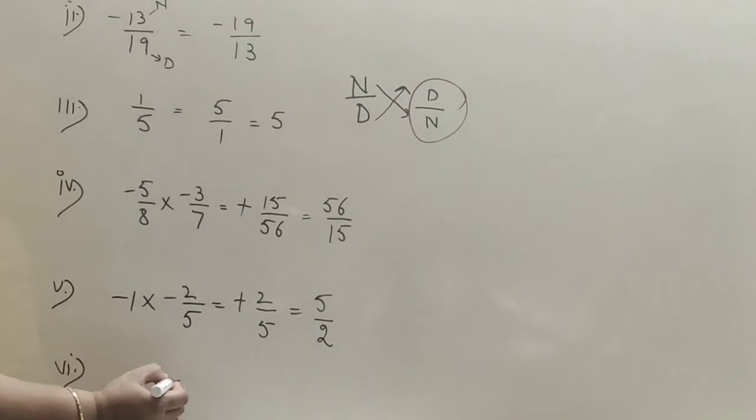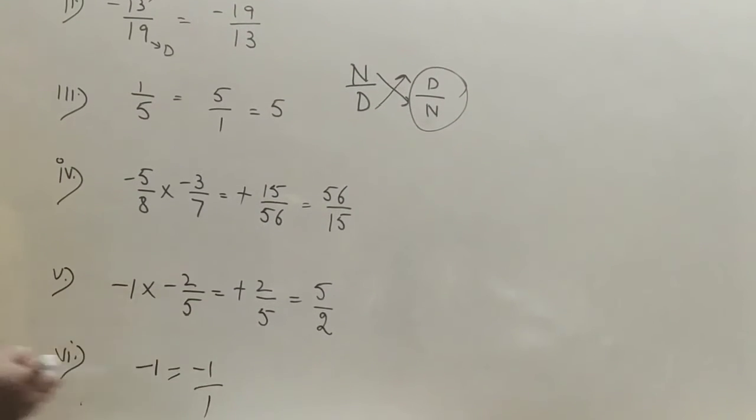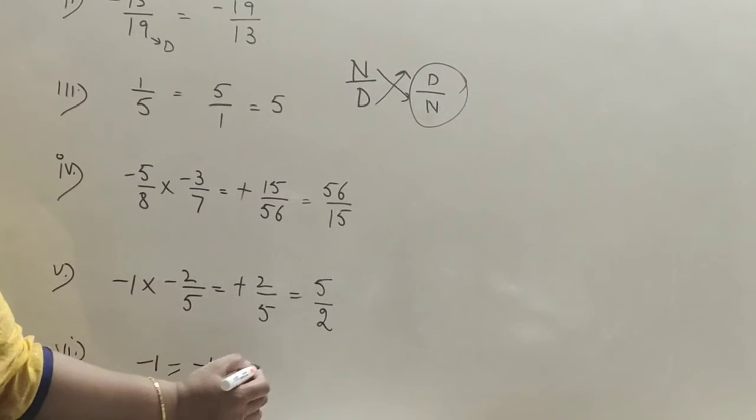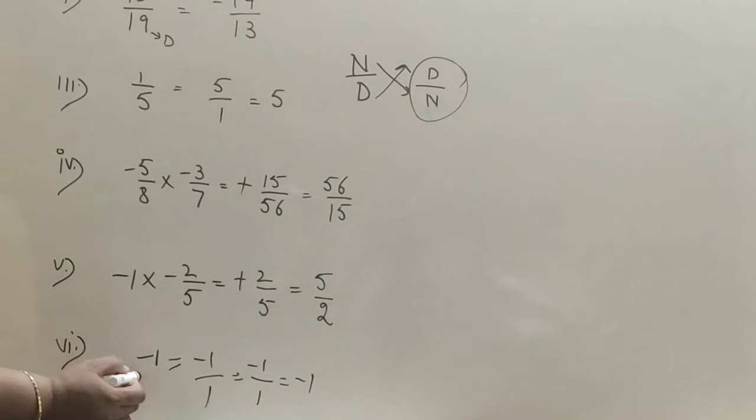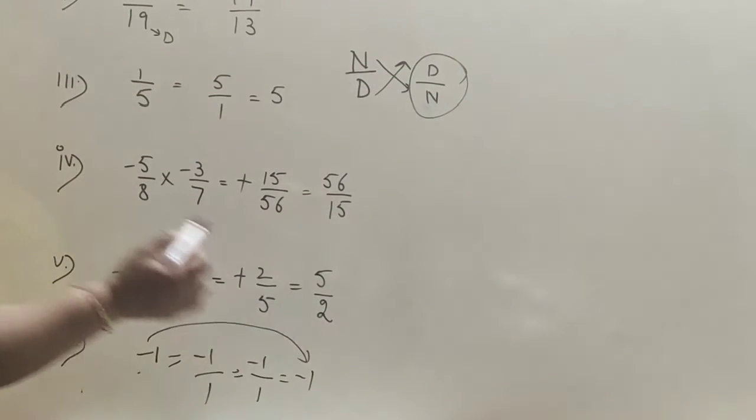The last one is minus 1. We can write minus 1 as minus 1 upon 1. And the answer is also 1 upon 1 with minus, it is minus 1. So the answer will remain same for minus 1.